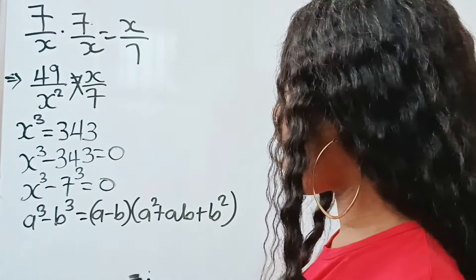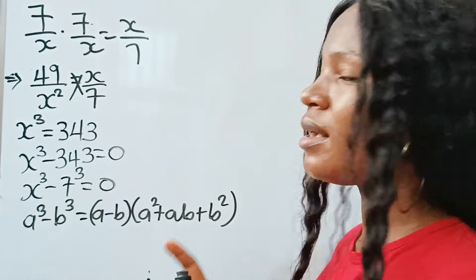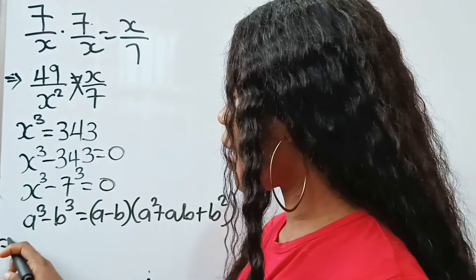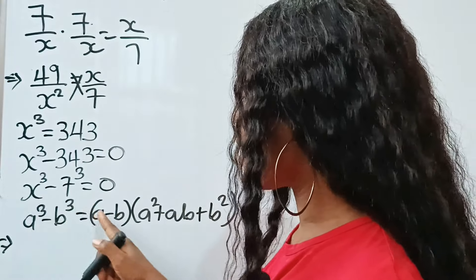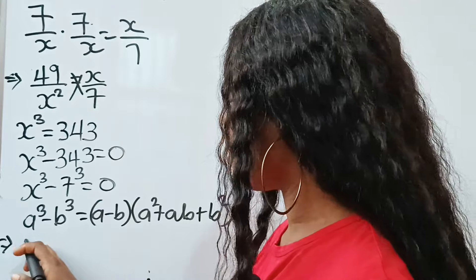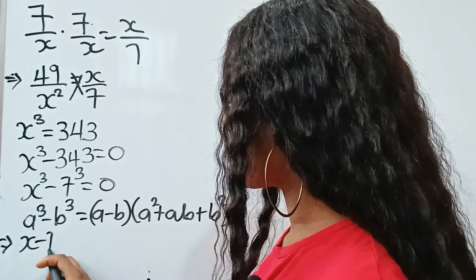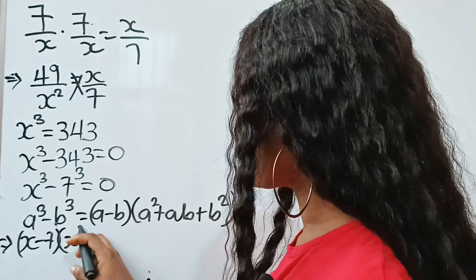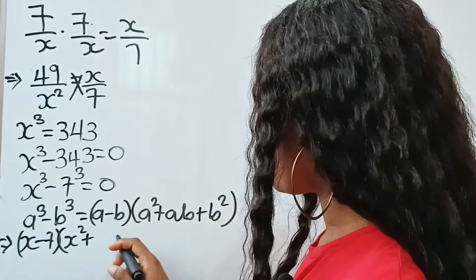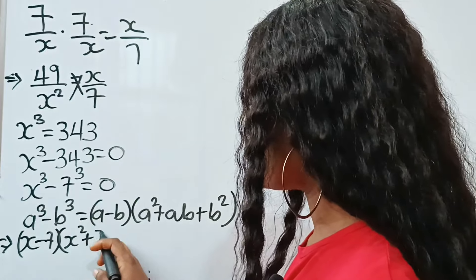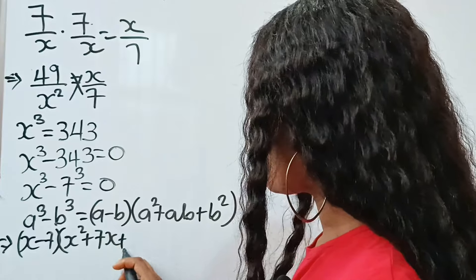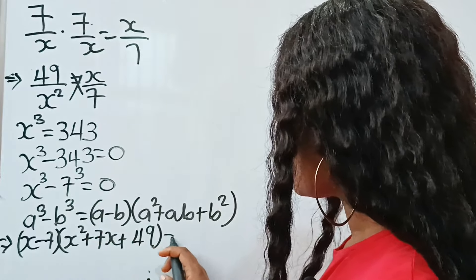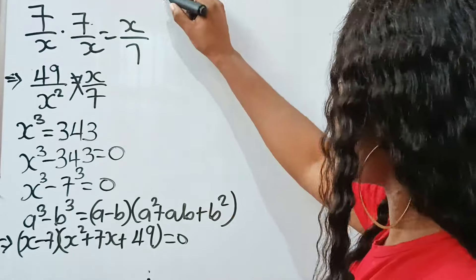In this case, our a is x and our b is 7. So let's substitute: we get (x minus 7) multiplied by (x squared plus 7x plus 49) is equal to 0.